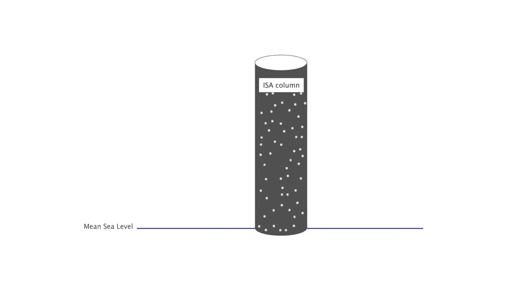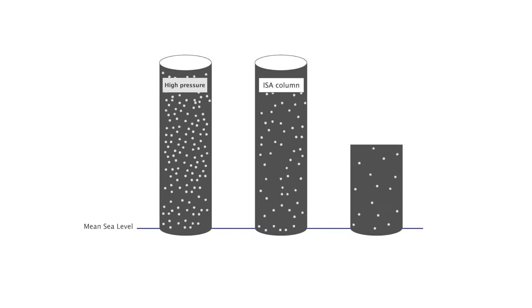Now we will consider the differences between ISA and the real atmosphere. Let's start with pressure. This is the weight of the air above the measuring point. We have three columns of air: ISA, high pressure, low pressure.